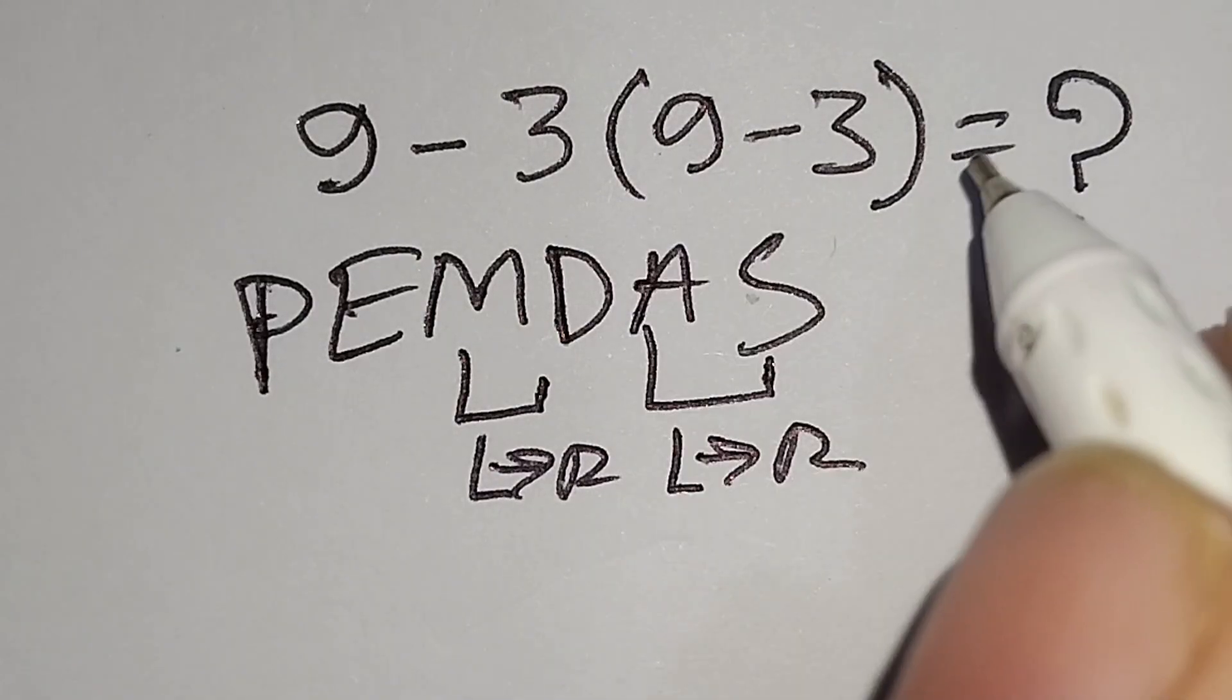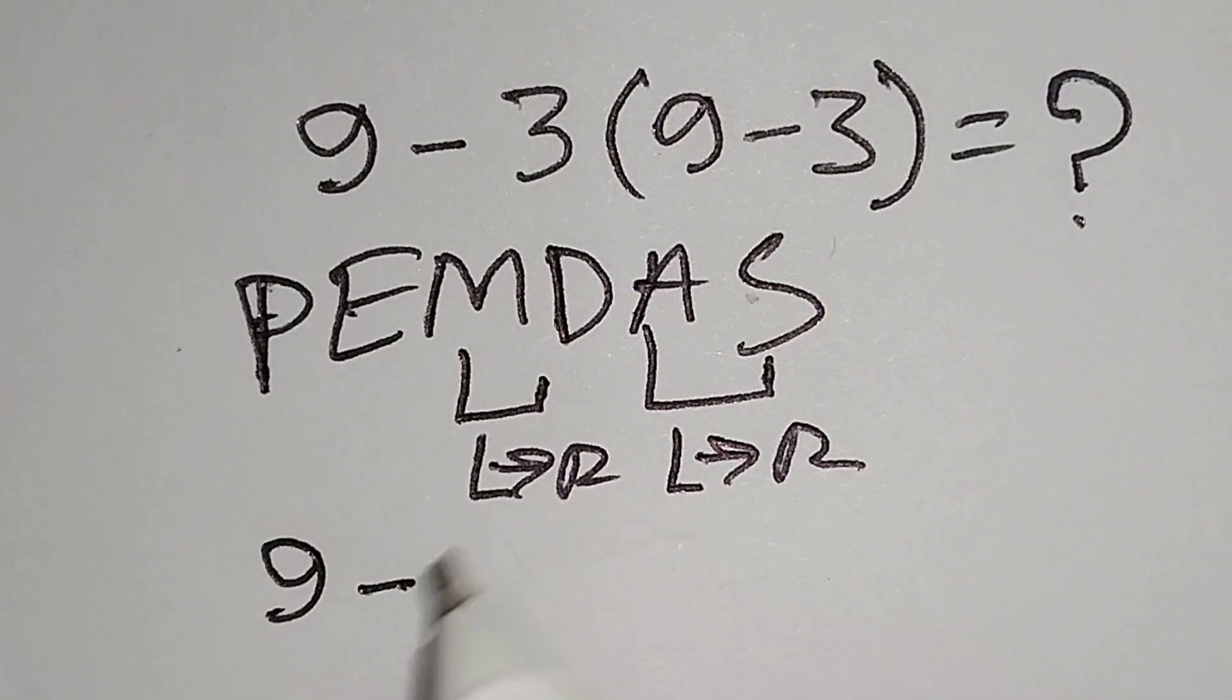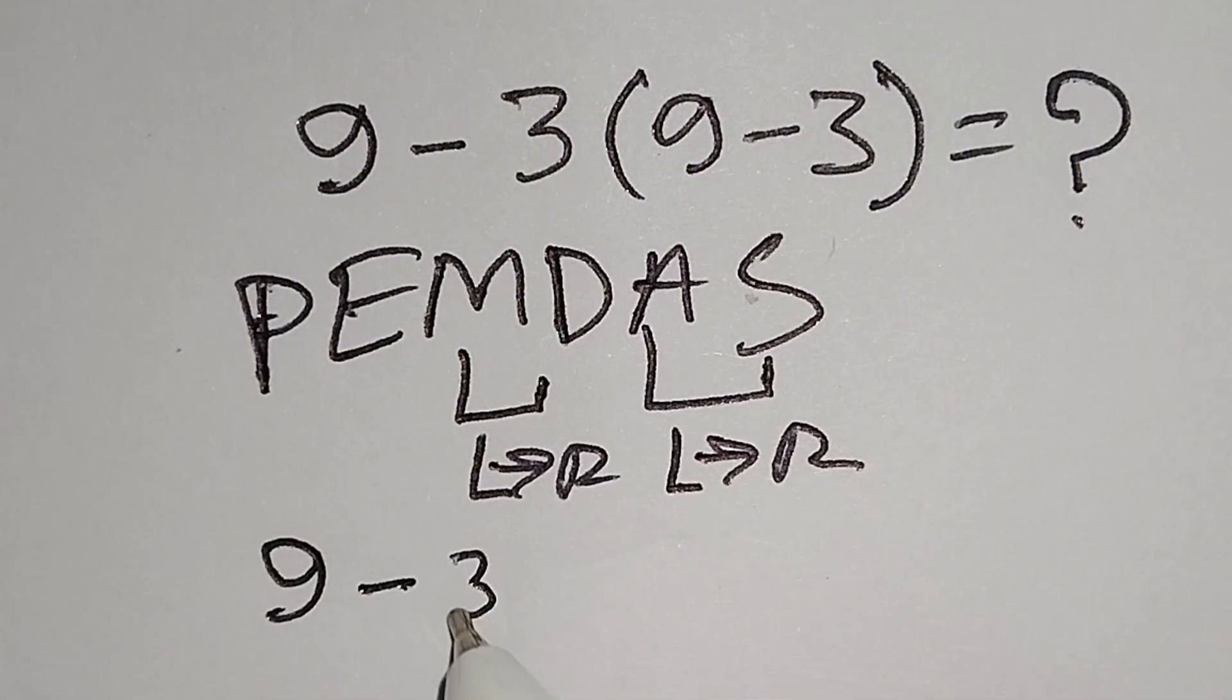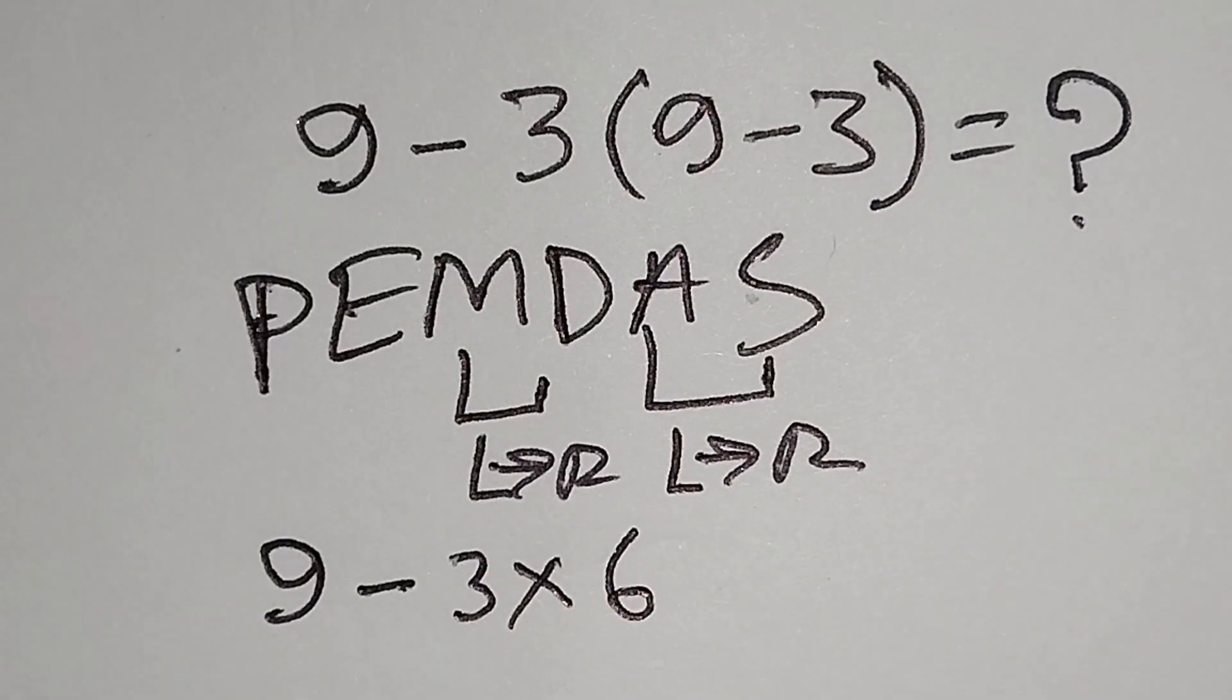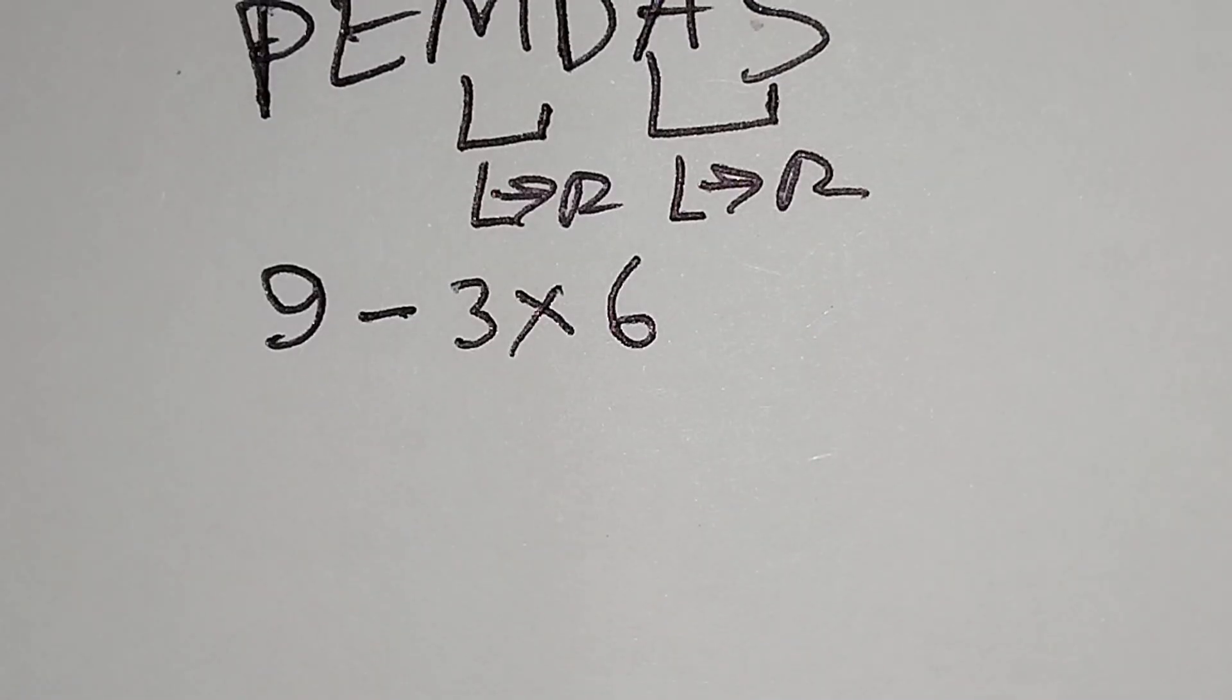Here, this 9 minus this 3, multiply this 9 minus 3 gives us 6. Now I have to work with this multiplication.